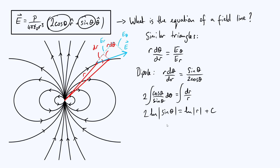We can simplify by bringing the factor of 2 inside the logarithm to raise sinθ to that power, giving ln(sin²θ). Since sin²θ is always positive, we can drop the modulus signs. Similarly, r is always positive by definition in polar coordinates, so we write ln(r) without modulus signs. Exponentiating both sides gives sin²θ on the left and e^(ln r + c) = r·e^c on the right.